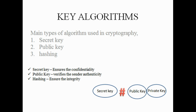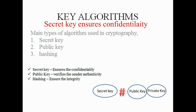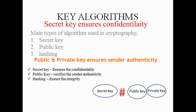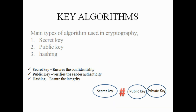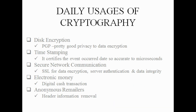These three types of algorithms used in cryptography each serve their own purpose. Secret key ensures confidentiality, public key ensures the sender's authenticity, and hashing verifies or ensures data integrity.